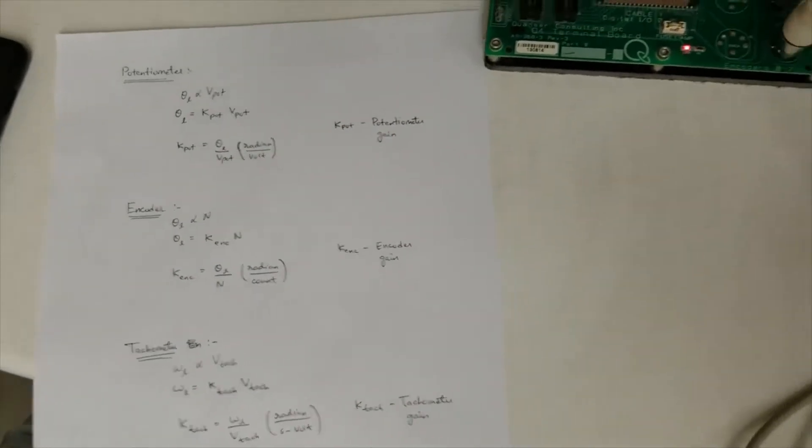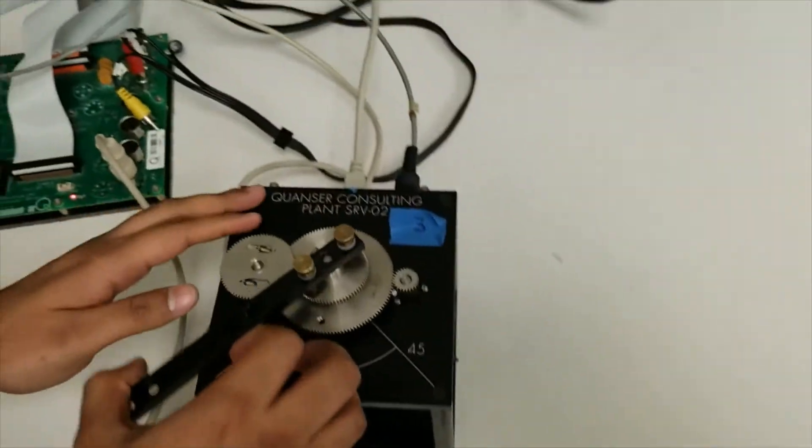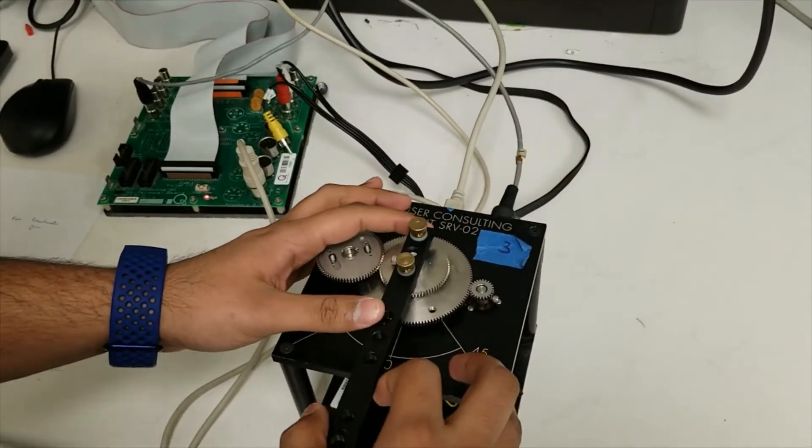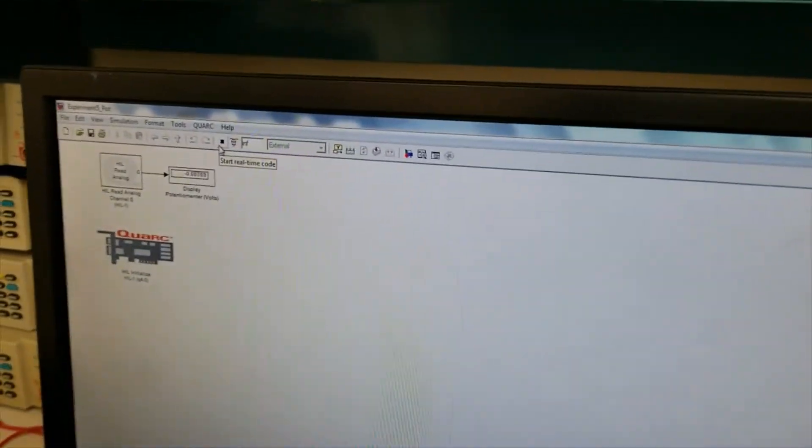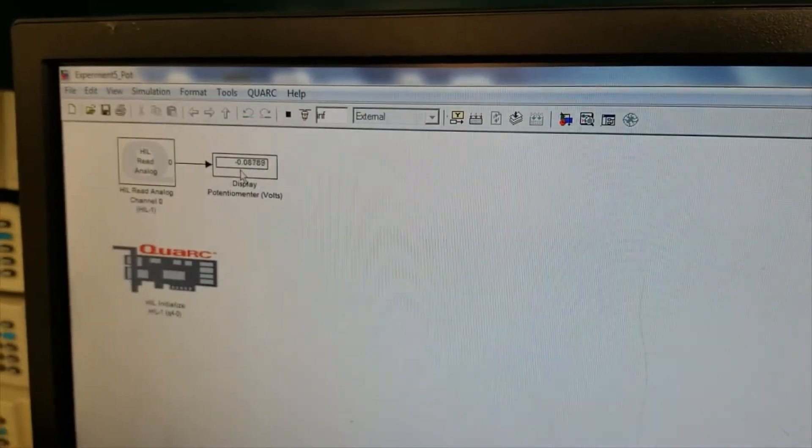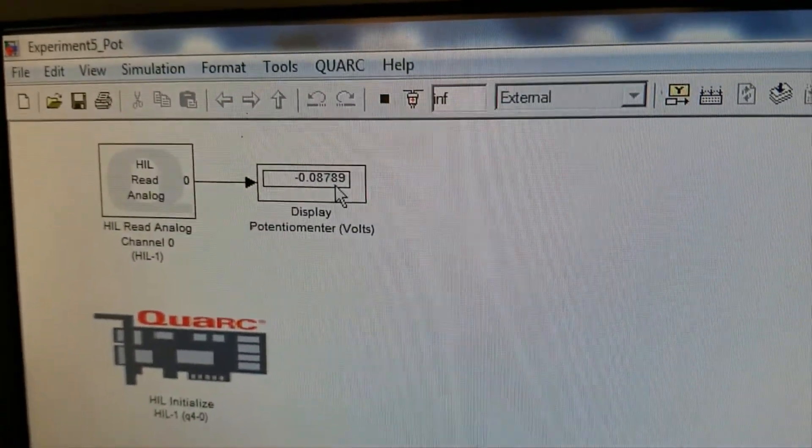For this experiment, we'll be putting the arm at 0 degrees and we'll run the experiment. As you can see, at 0, it's at minus 0.08 or something. This would be your offset.